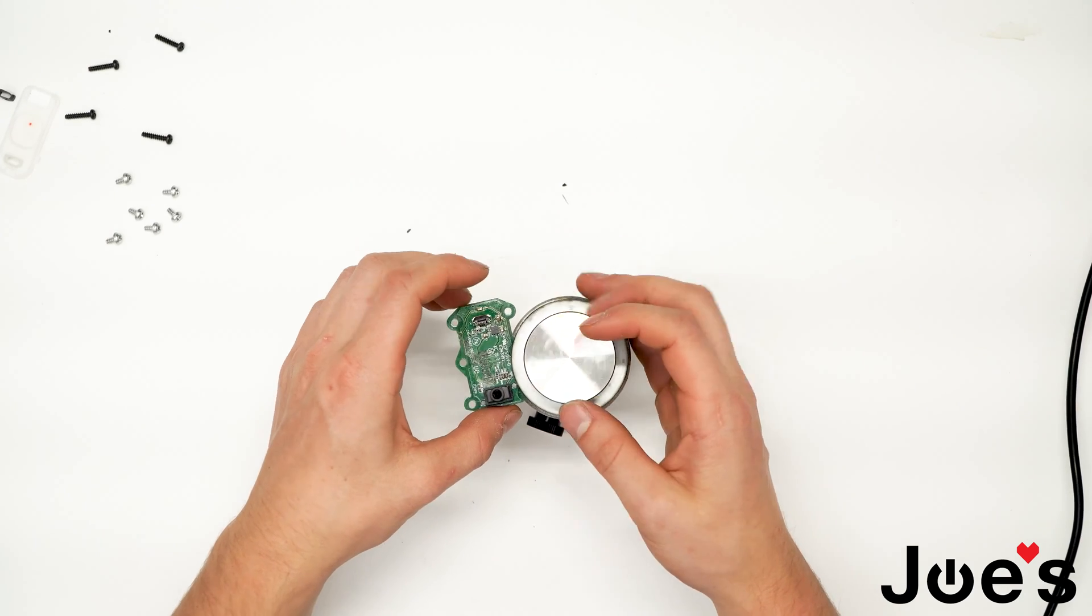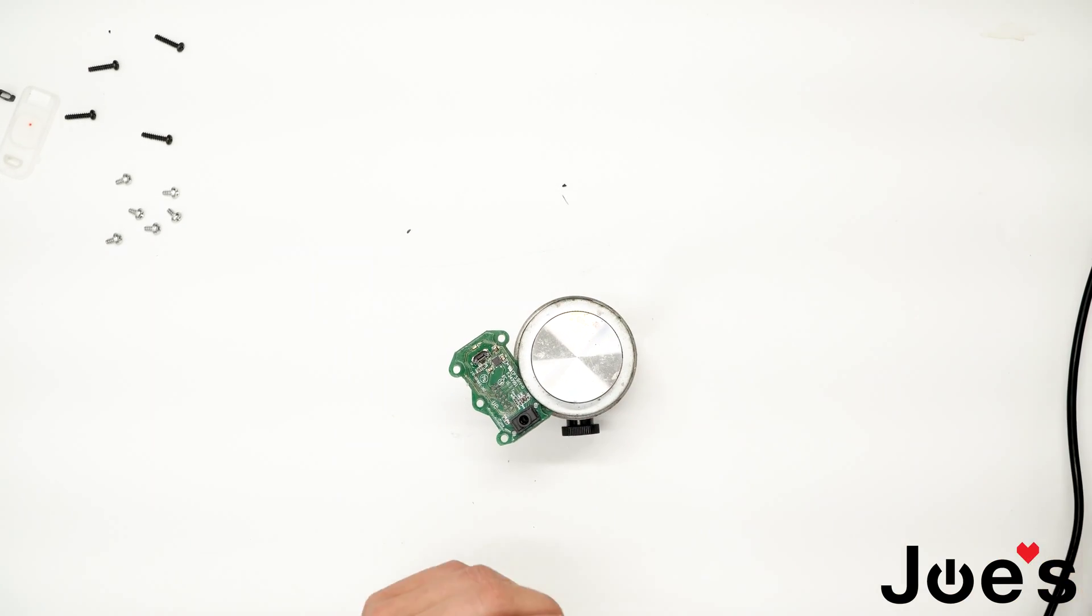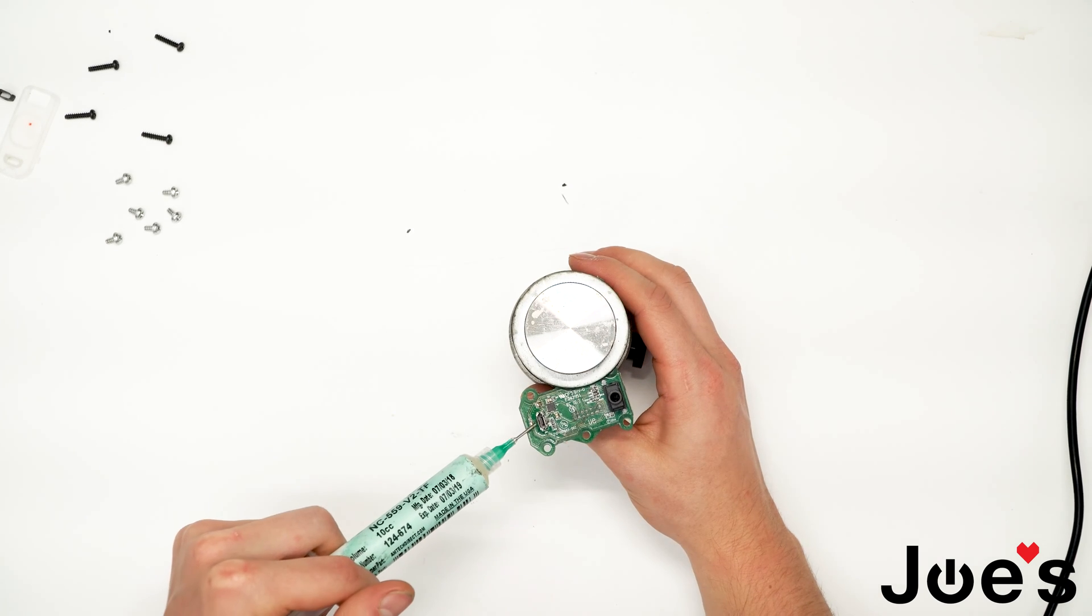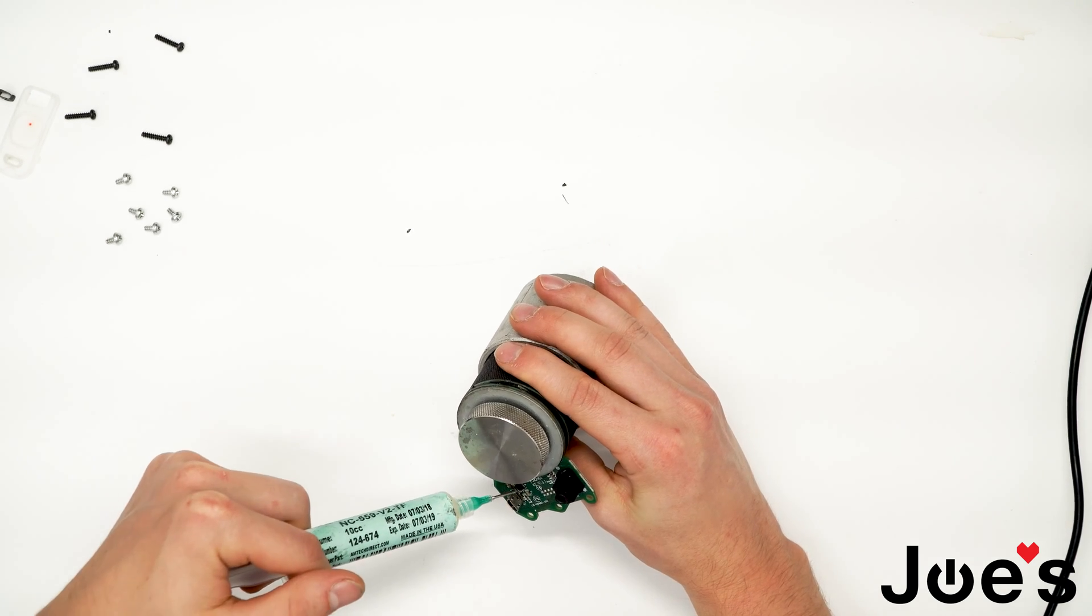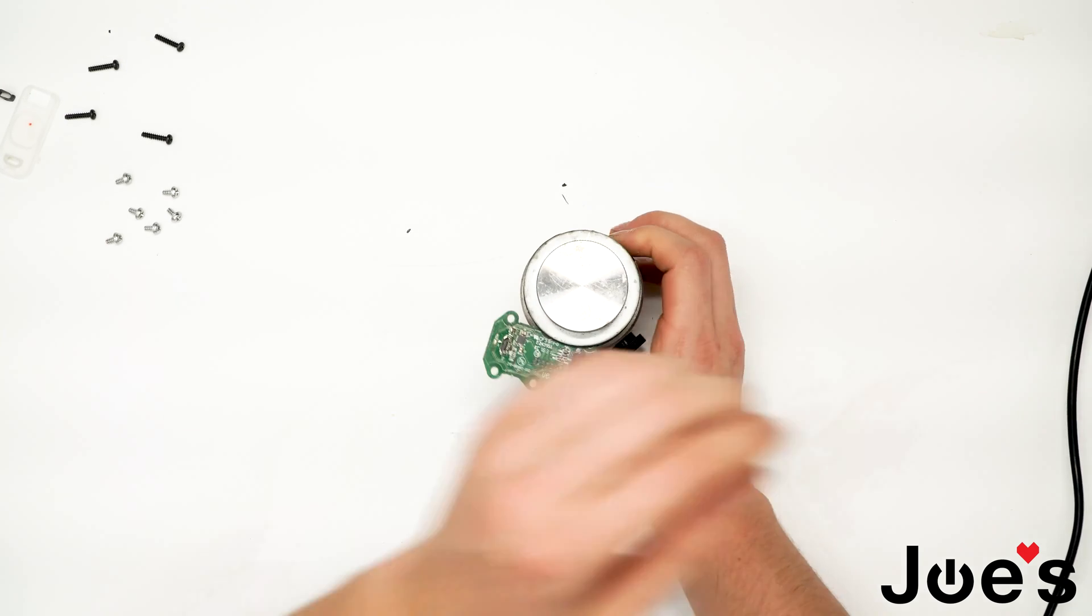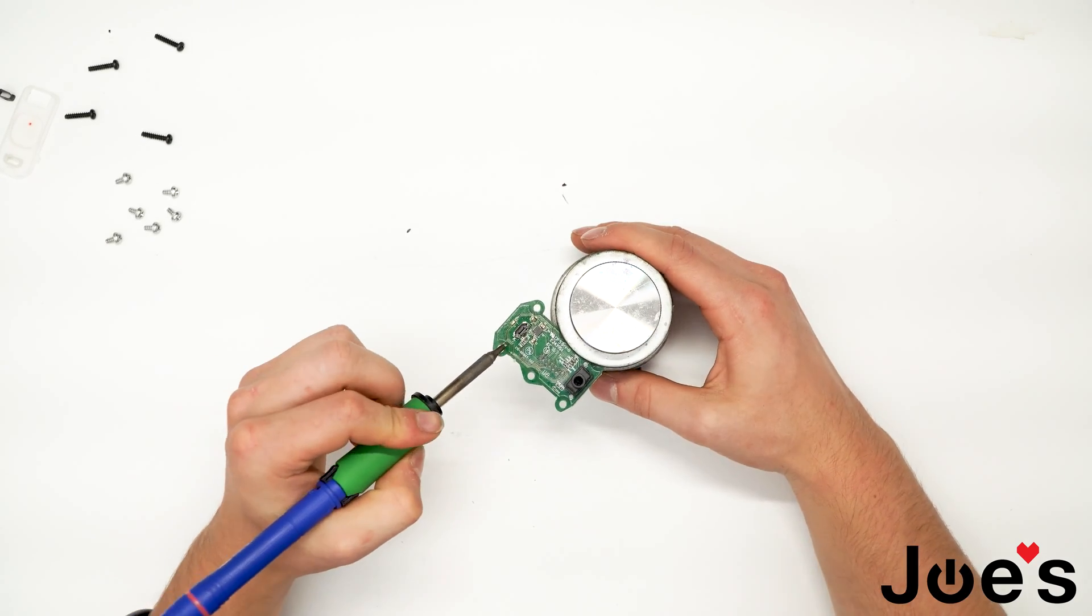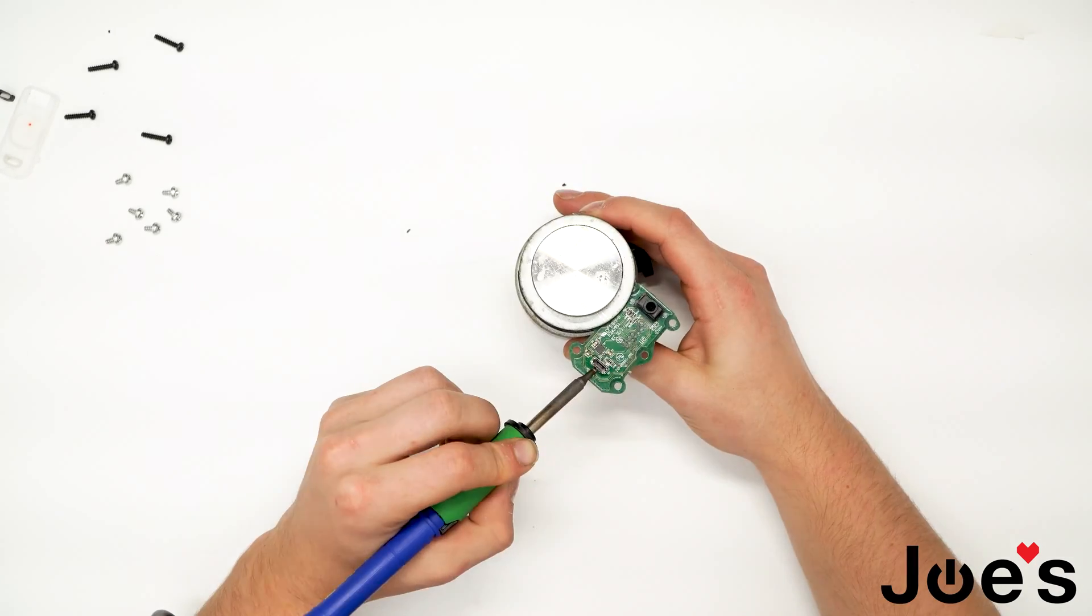Attach it back onto the Omni vise. Now we can also add some solder on the top side of the anchors just to get a more secure bond. Like so.